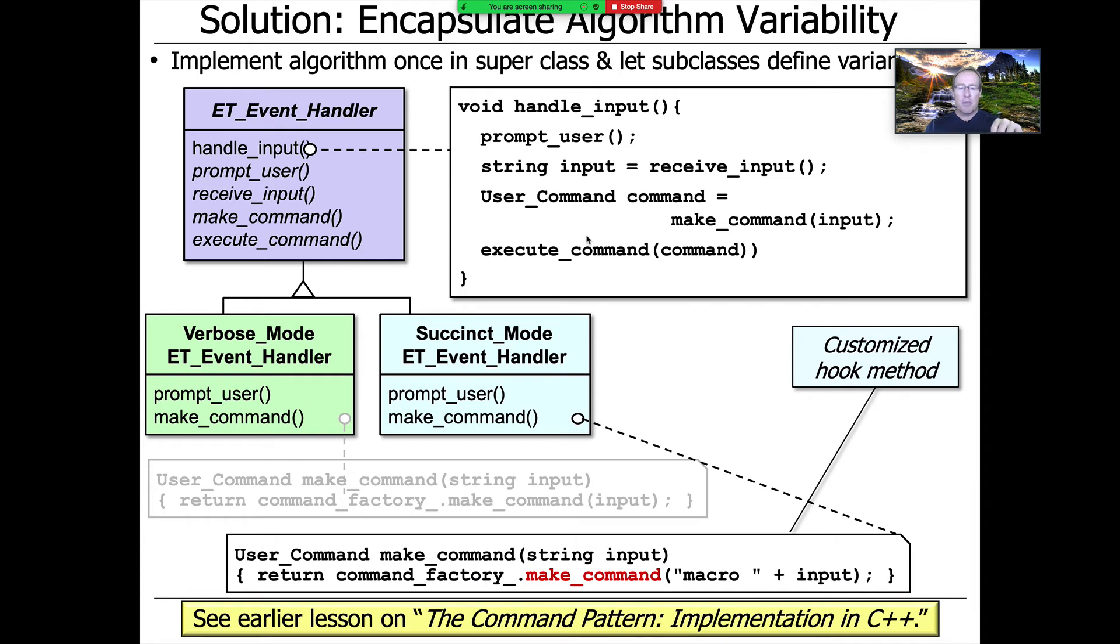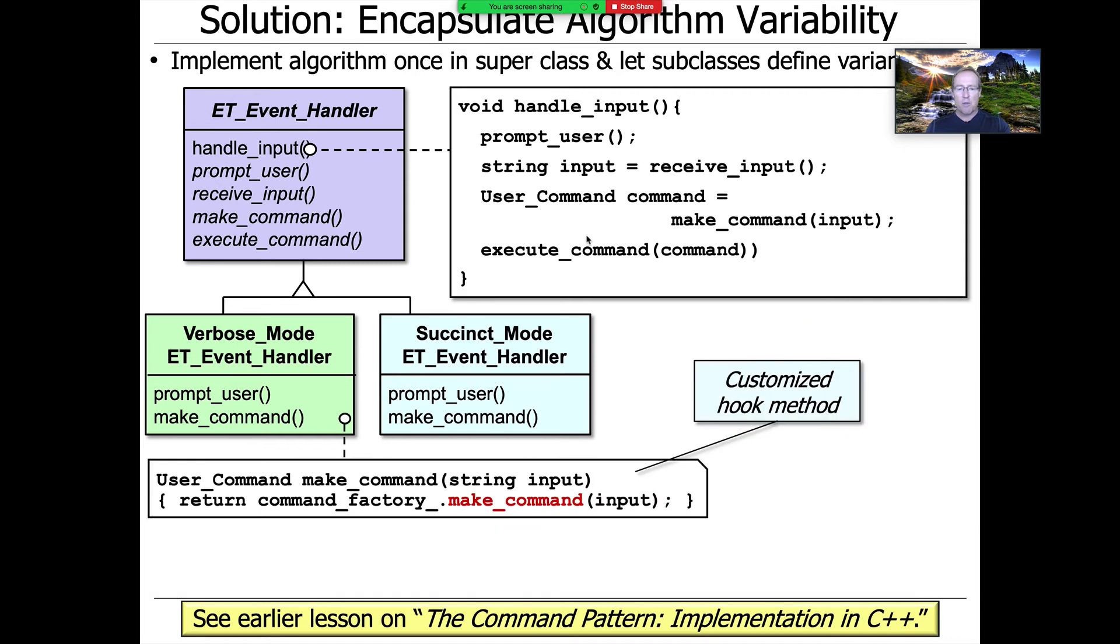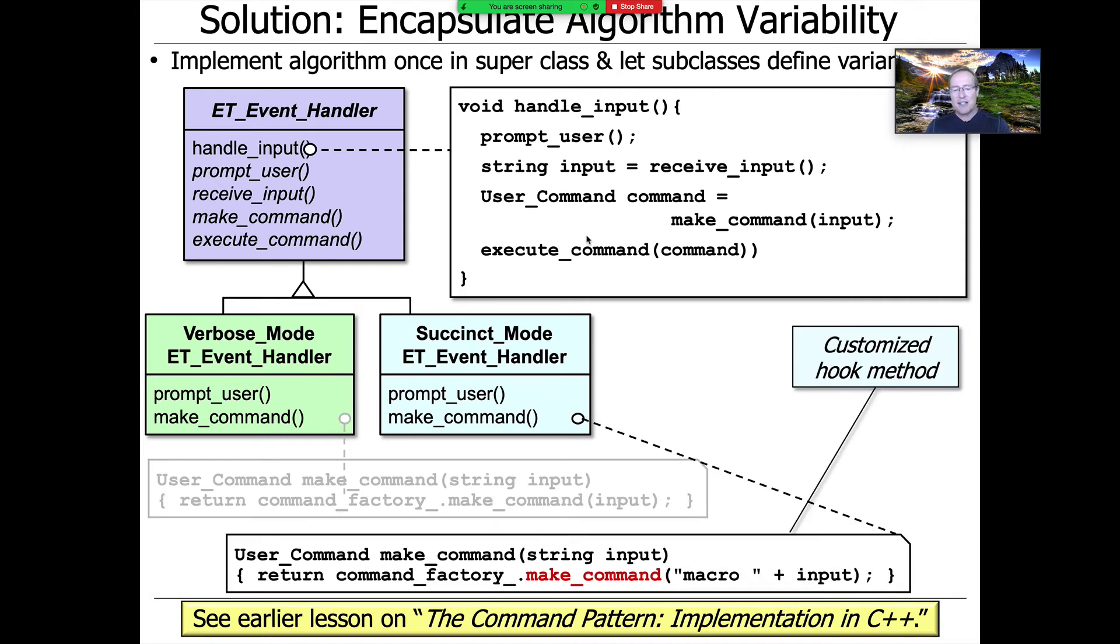Here is the make command hook method for succinct mode. At first glance, they look kind of the same, but they actually differ in an important way. For the succinct mode version, we prepend the keyword 'macro' space in front of the actual user input. That's a trigger that tells the underlying factory method make command to make us a macro command as opposed to a regular command.